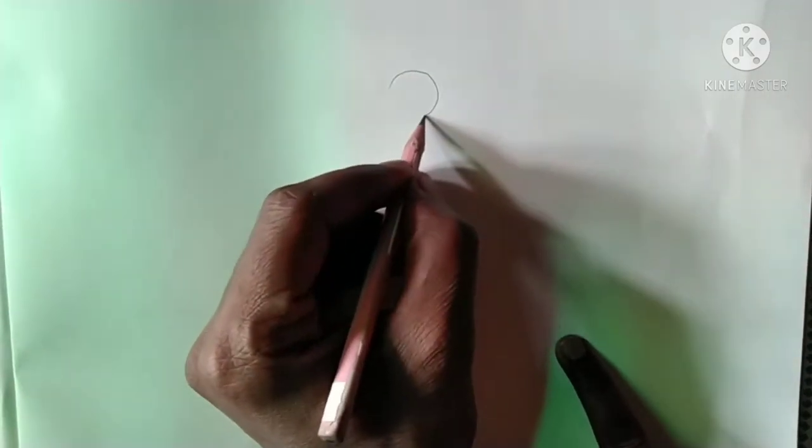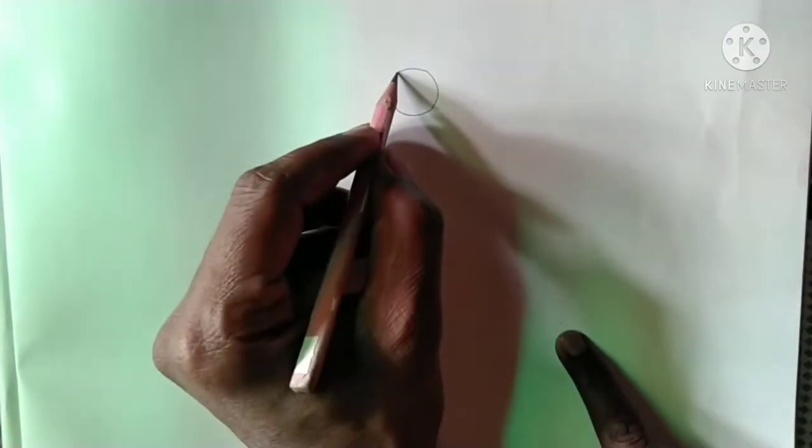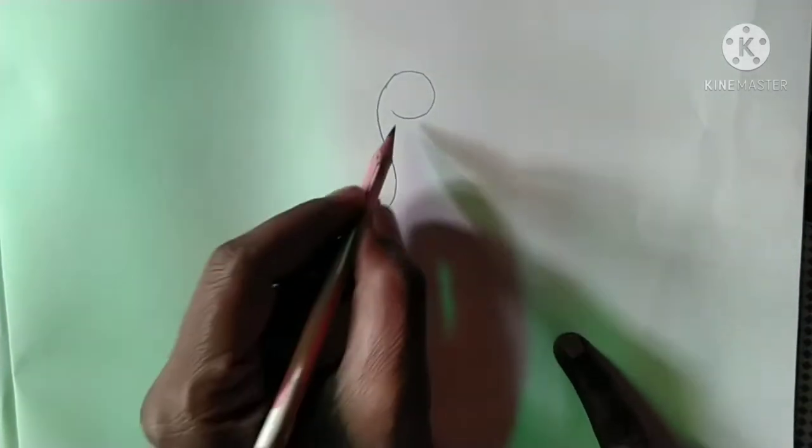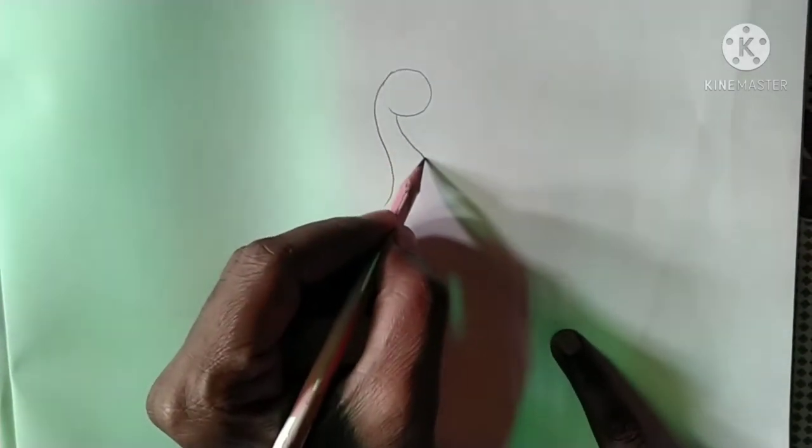At first we draw the face of the peacock. Like this. Draw a circle. Then the neck of the peacock.